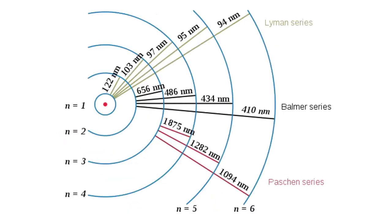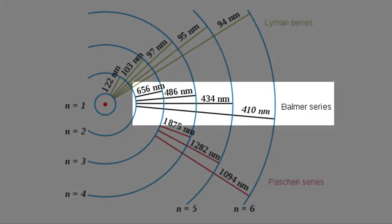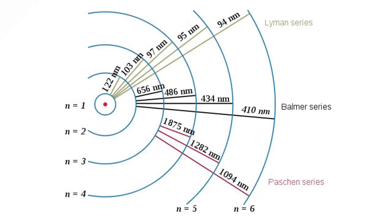There are several more transitions that occur within the atom, but only the ones that we just discussed emit wavelengths of visible light. All other transitions emit light with wavelengths that lie outside of the 400 to 700 nanometer range of the visible spectrum.